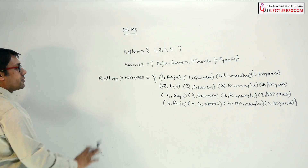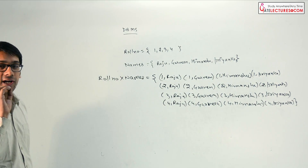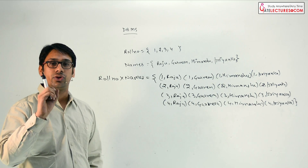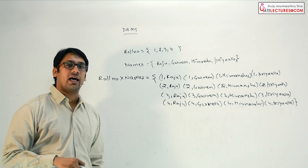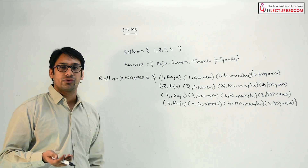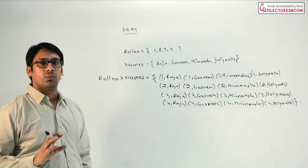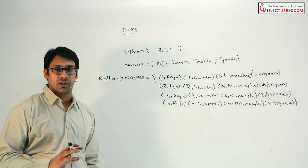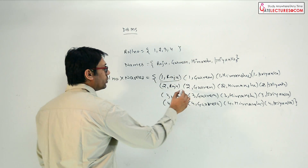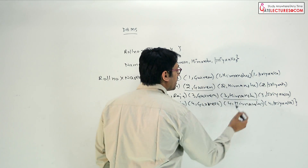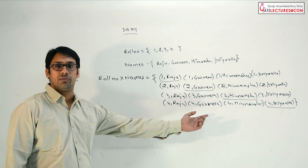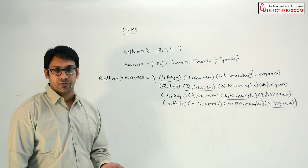Now when I say there is a relation between roll number and names, that means this relation is going to satisfy some kind of constraint. For example, in a classroom, not all students can have roll number one — all students cannot have roll number two, three, or four either. There will be one student associated with each roll number. All the other combinations are kind of useless.